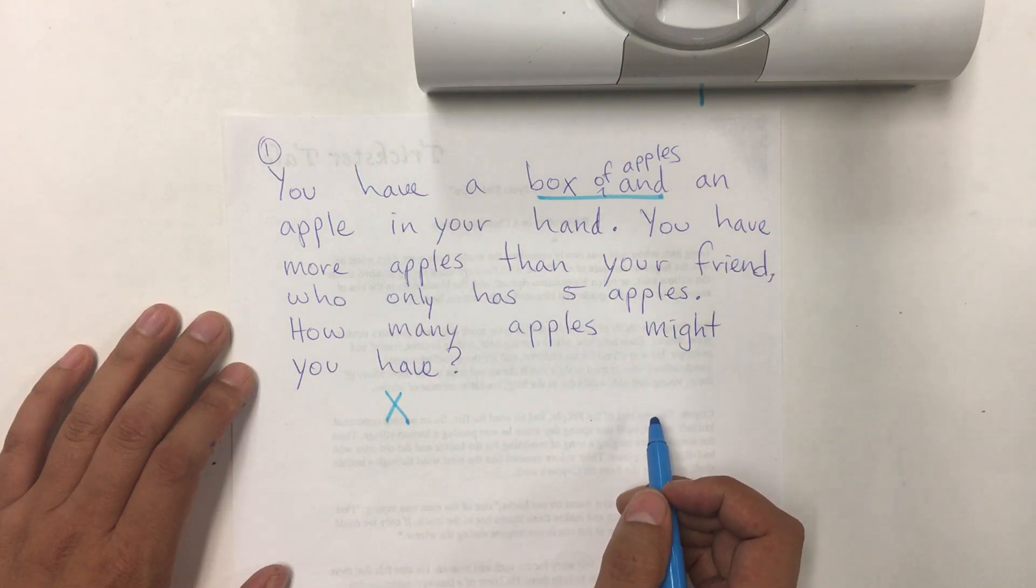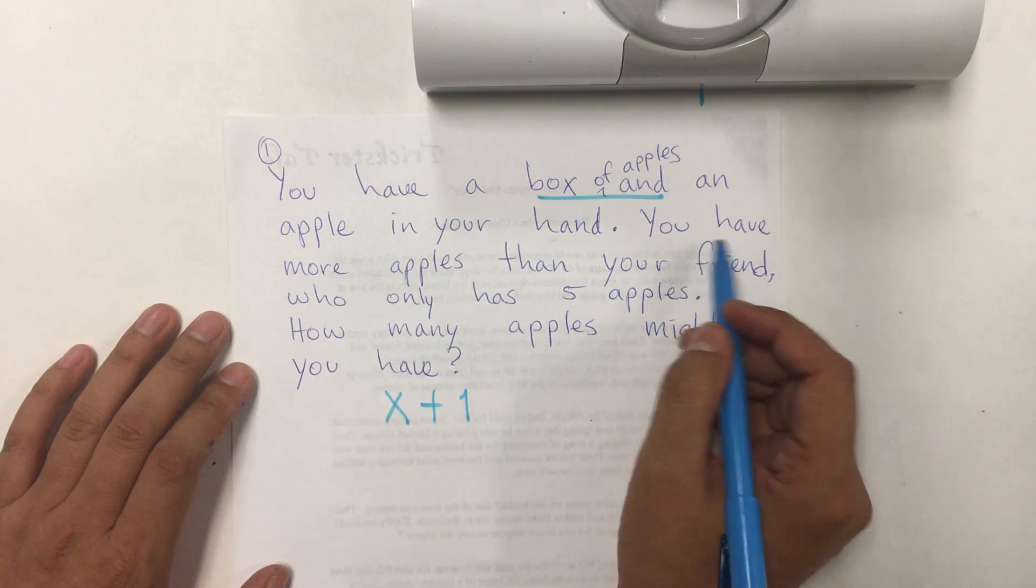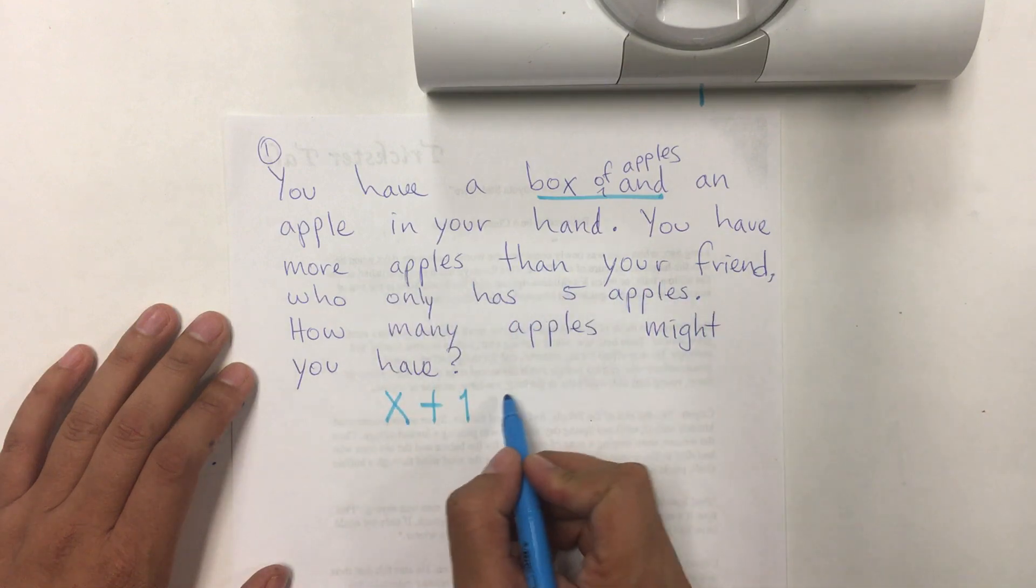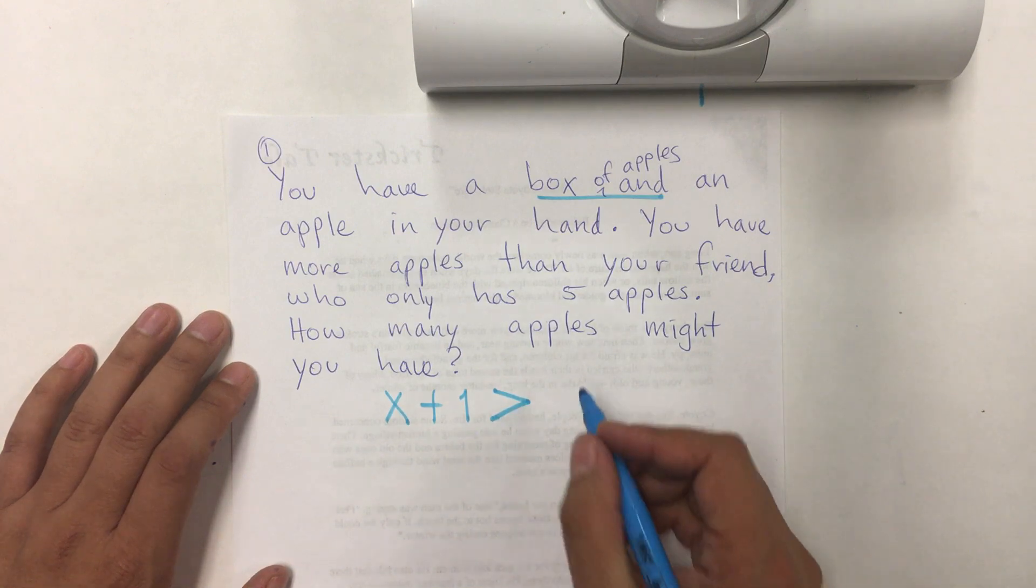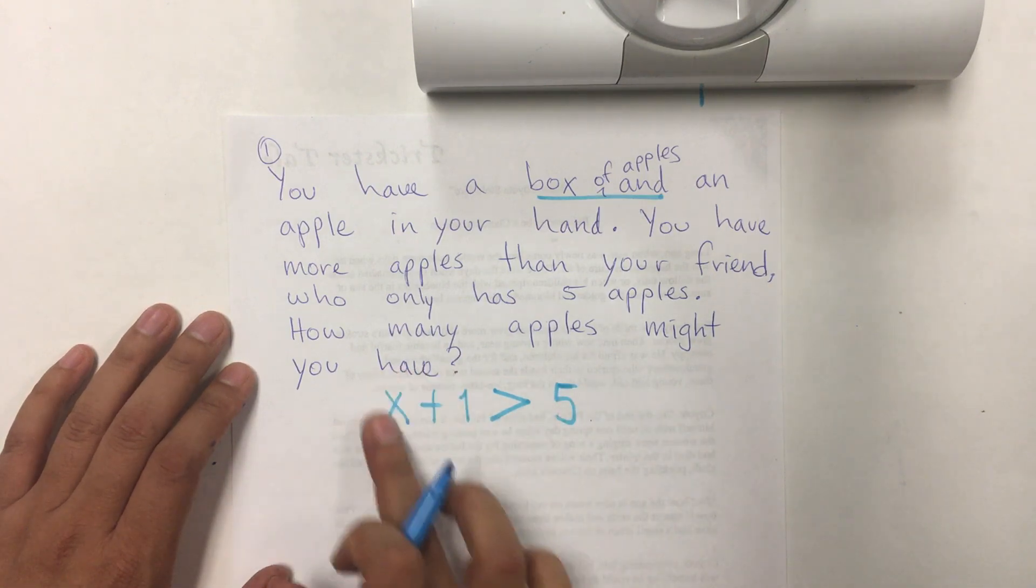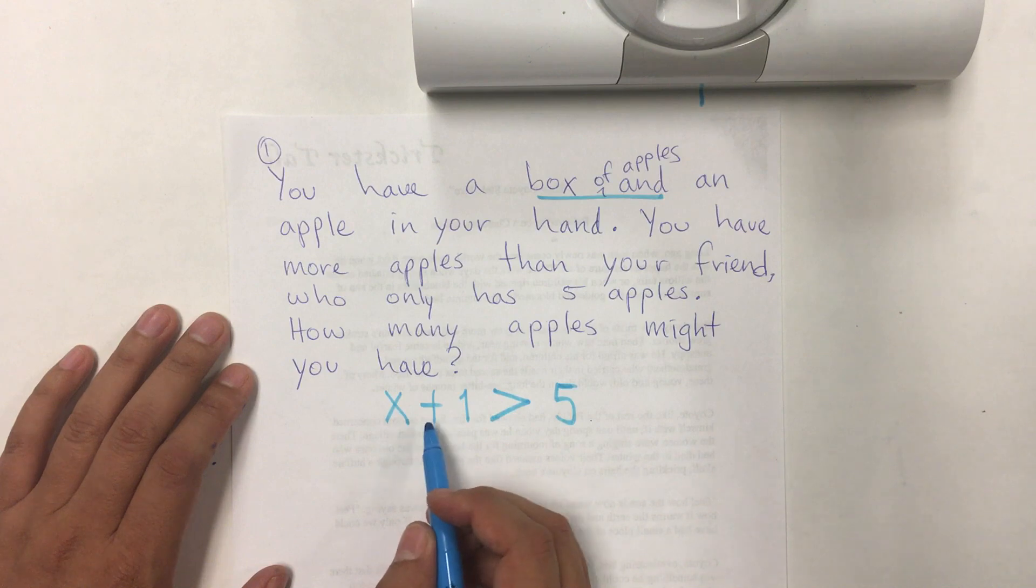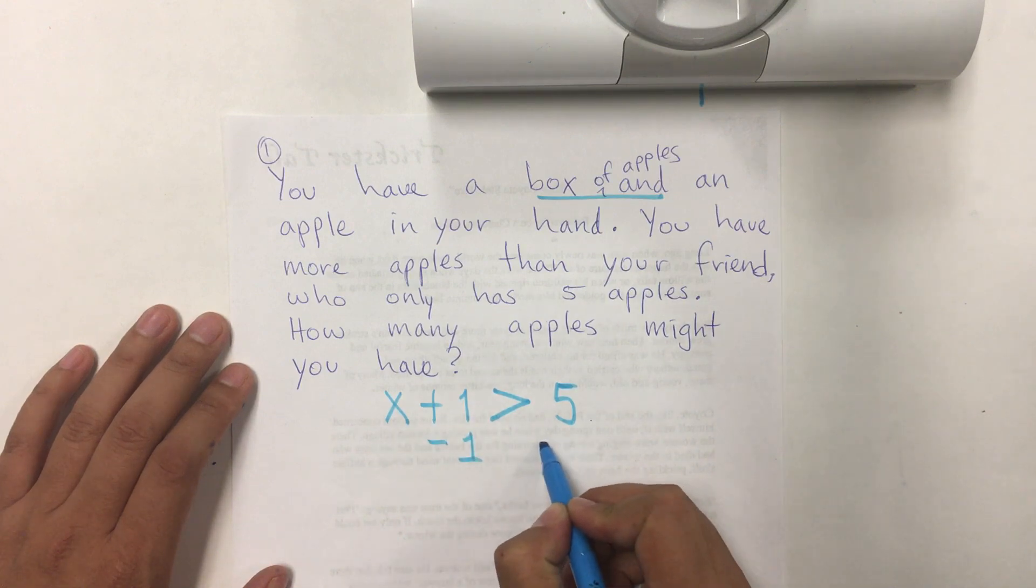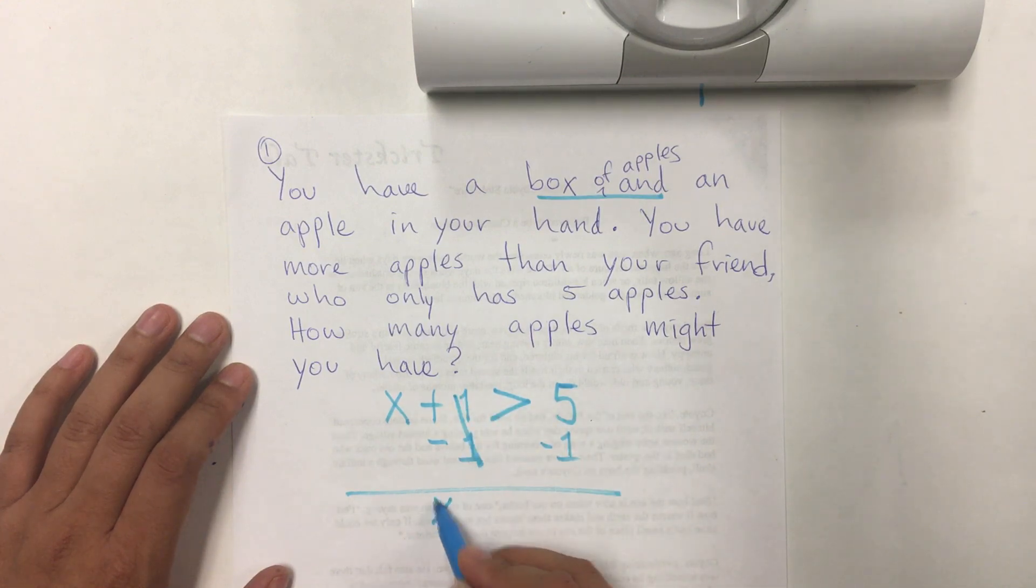That's X because we don't know how many apples are in that box. And one apple in your hand. So, plus one. You have more apples than your friend. More than, it's greater than. Your friend has five apples. So, whatever you have in the box plus the one in your hand is greater than five. How many apples might you have in the box? We're going to subtract one that is in the hand. So, it's going to be X is greater than five minus one is four.